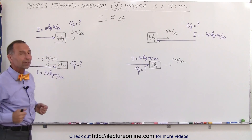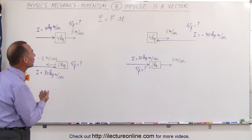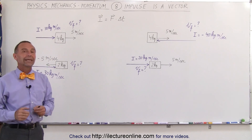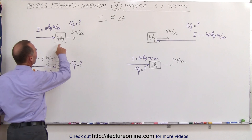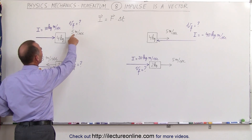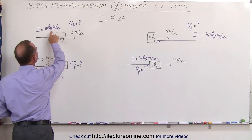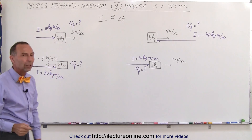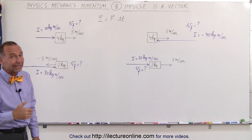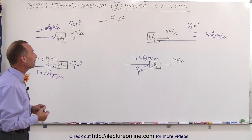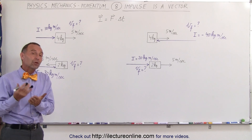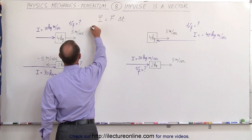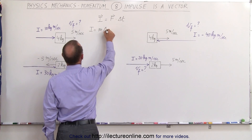Let's look at four simple examples to see what the final velocity will be for an object that's initially moving in some direction — it has a certain amount of mass and some impulse in a particular direction is applied to the object. The impulse is equal to the change in momentum, which is the mass times the change in velocity.